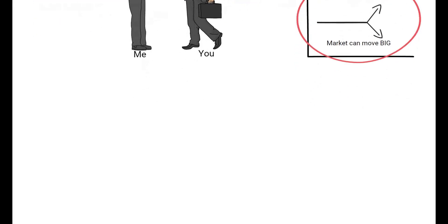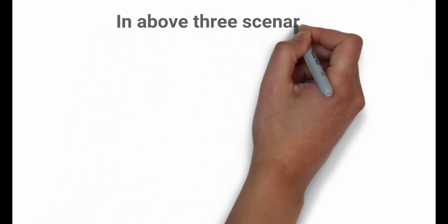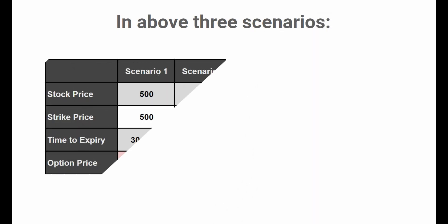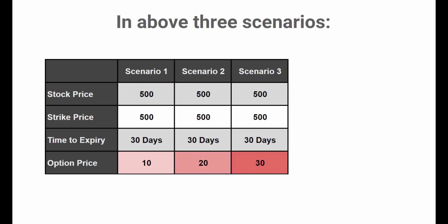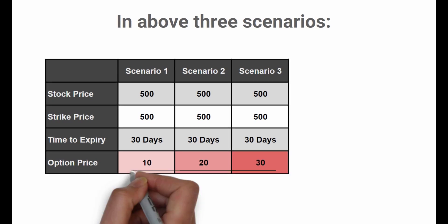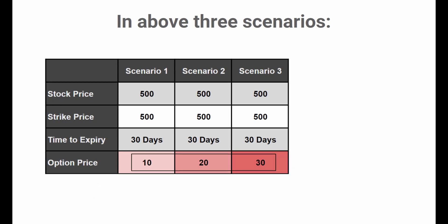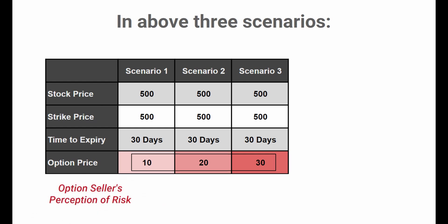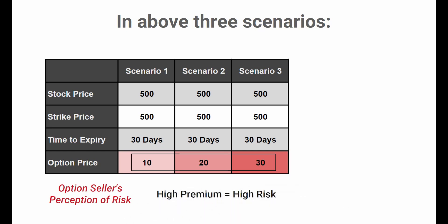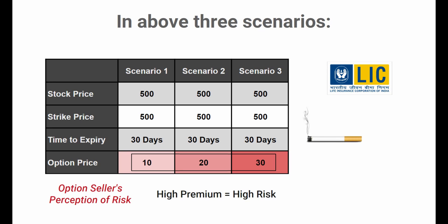Look at the three situations — they are all identical in stock price, strike price, and time to expiry, and yet the option prices are different. What changed? The answer is the option seller's perception of risk. The option seller charges a higher premium when there is a high chance of big movement against the seller.